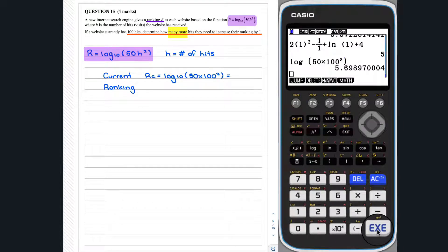The website's current ranking is 5.69897. To increase their ranking by one, the website will need a new ranking of 6.69897. Knowing this, we can calculate the number of hits required to increase the ranking by one by solving the following equation.